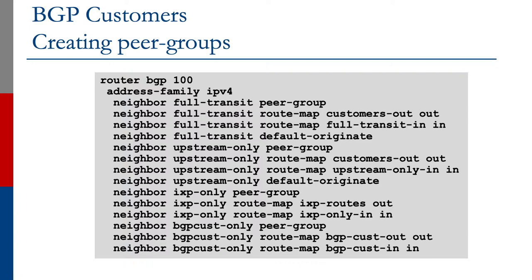For people who are only interested in upstream, we create a new peer group called upstream-only. The route map for outbound is the same — it's still customers-out. But the route map for inbound is upstream-only-in. We also originate a default route for people inside this upstream-only peer group.